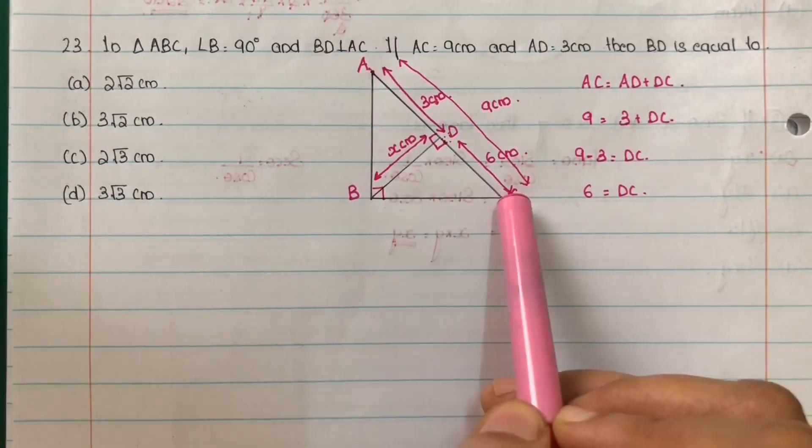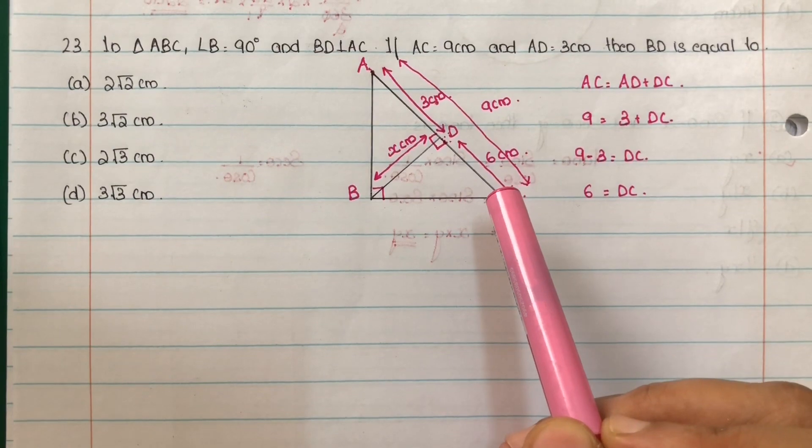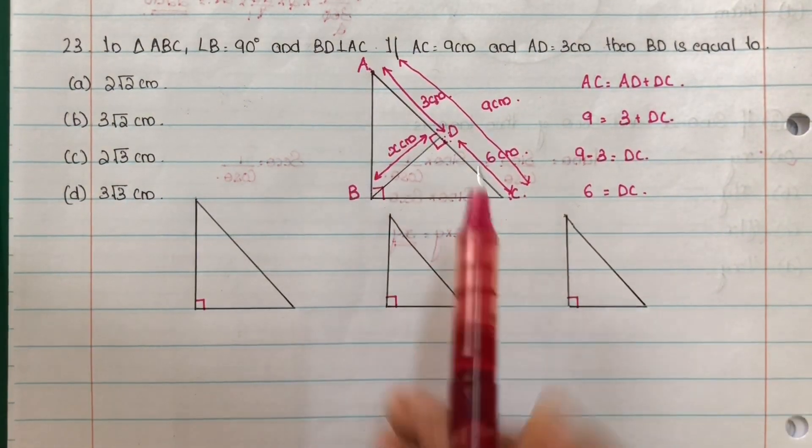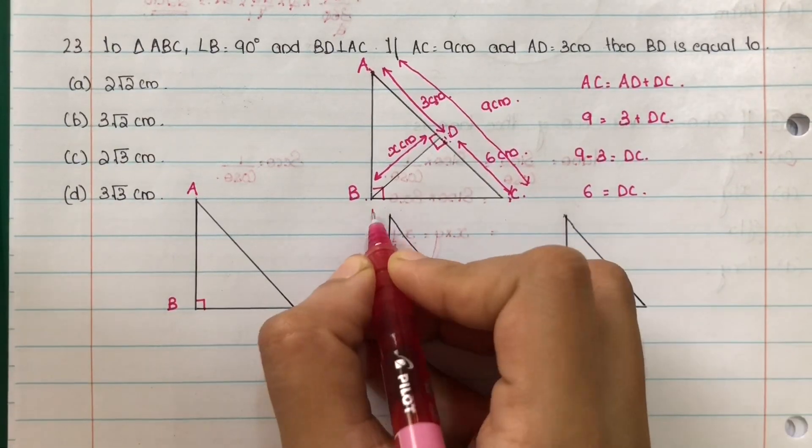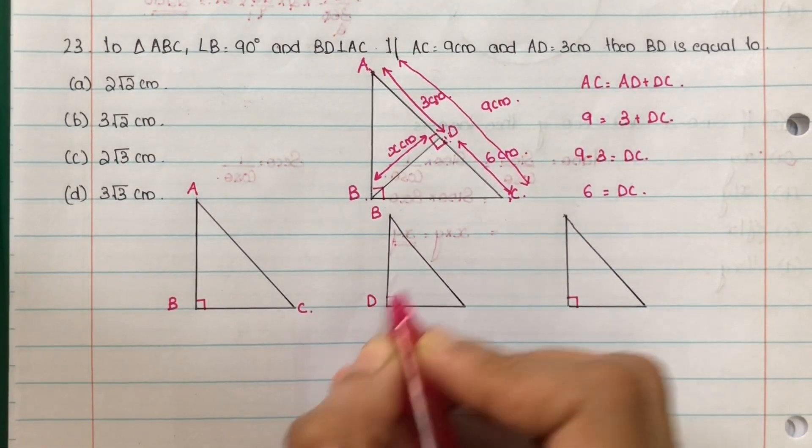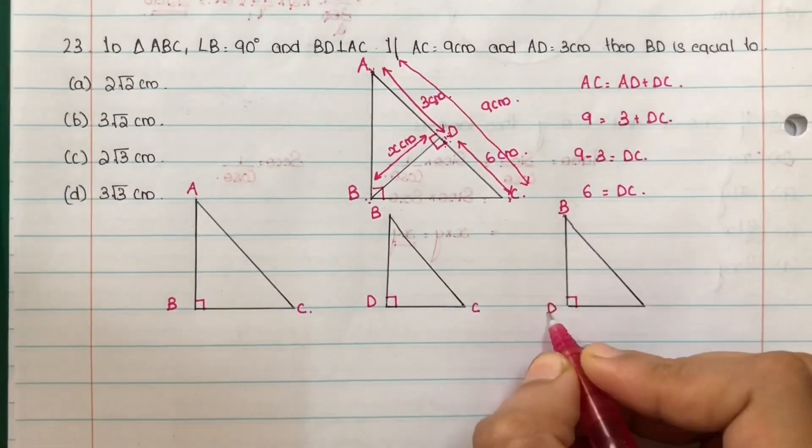Right angle triangles. ABC, BDC, and BDA. Total right angle triangles. Next, BDC, right angled at D. Next, BDA.